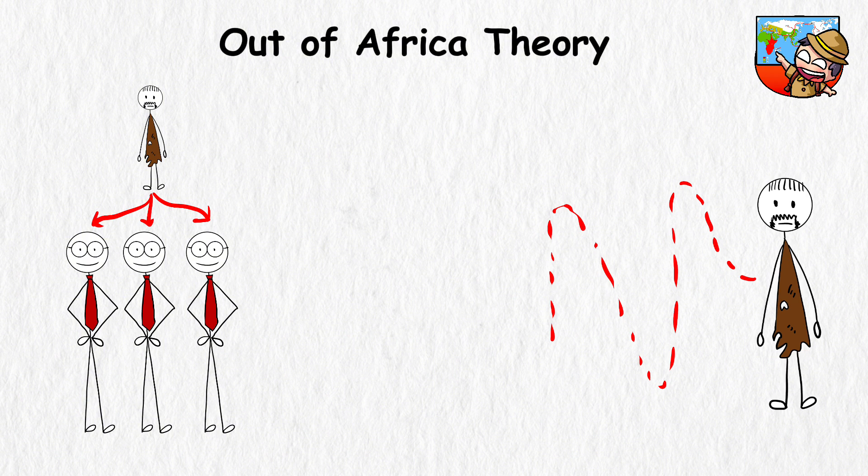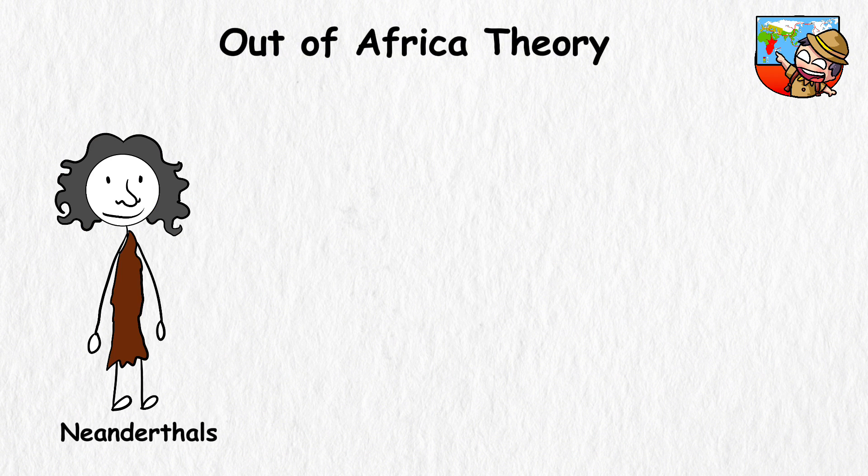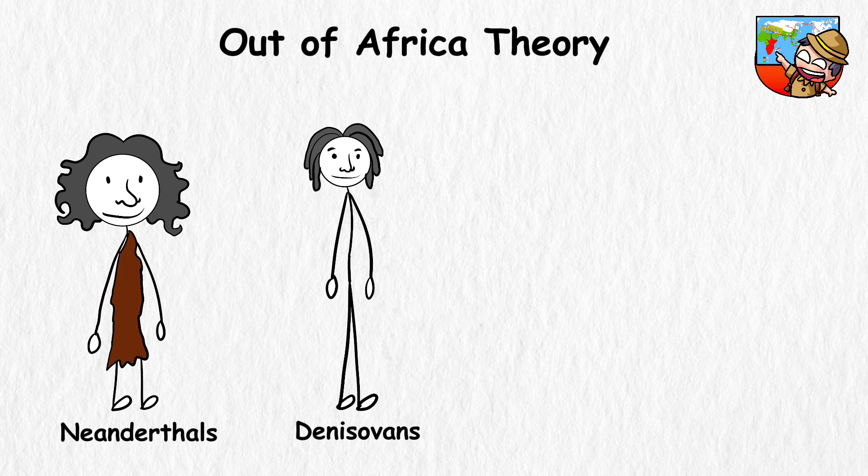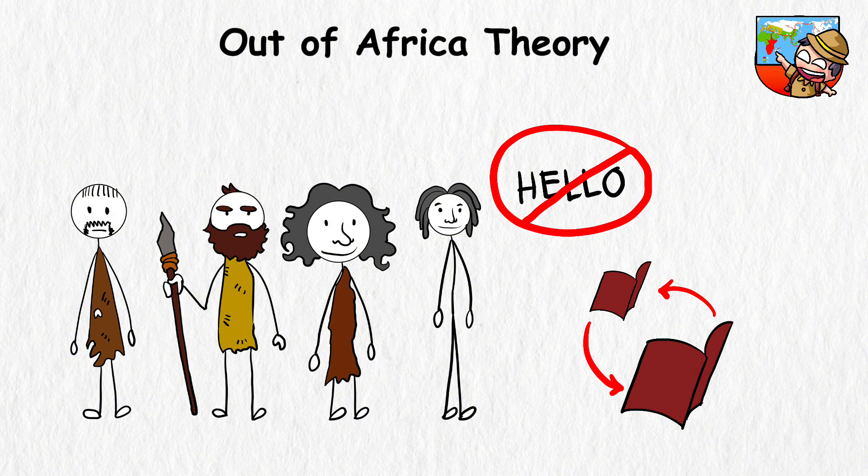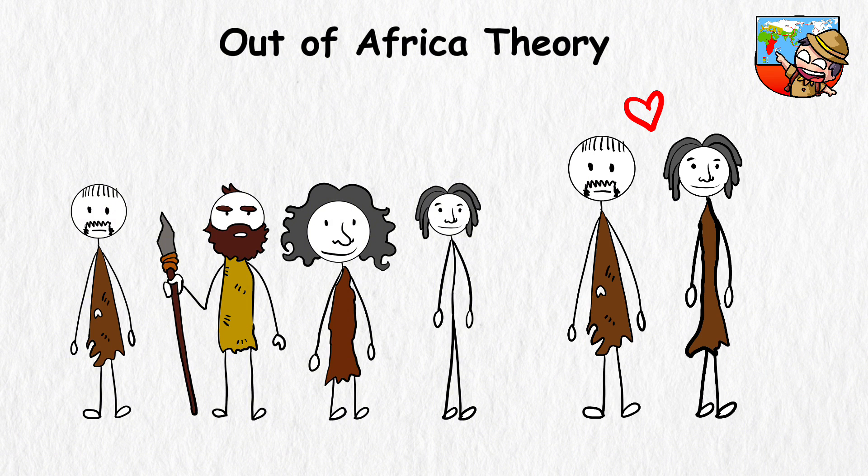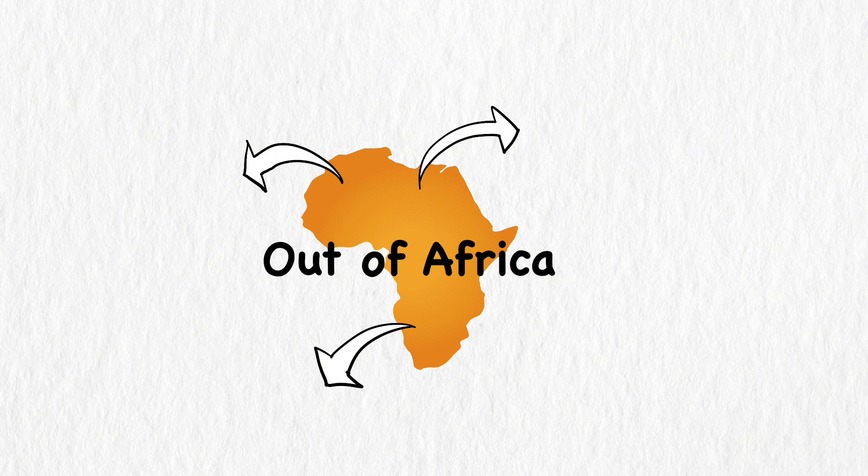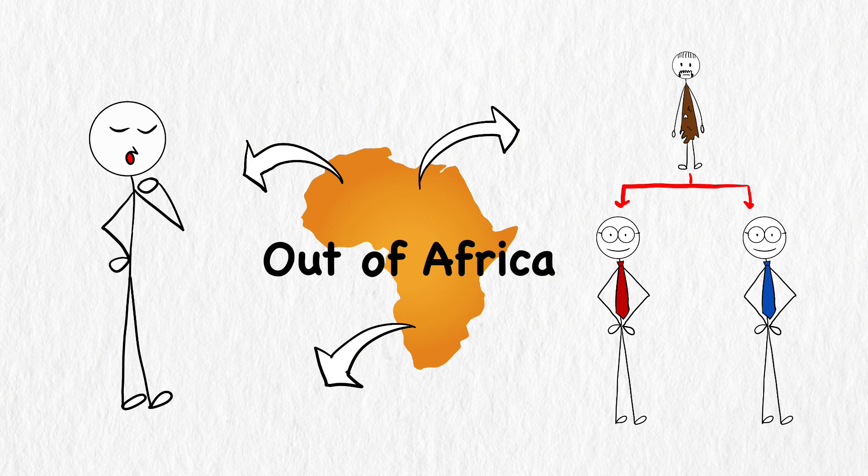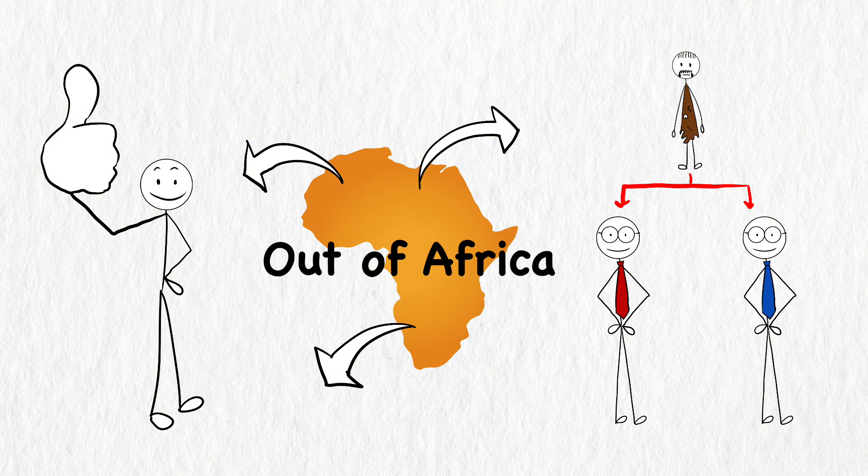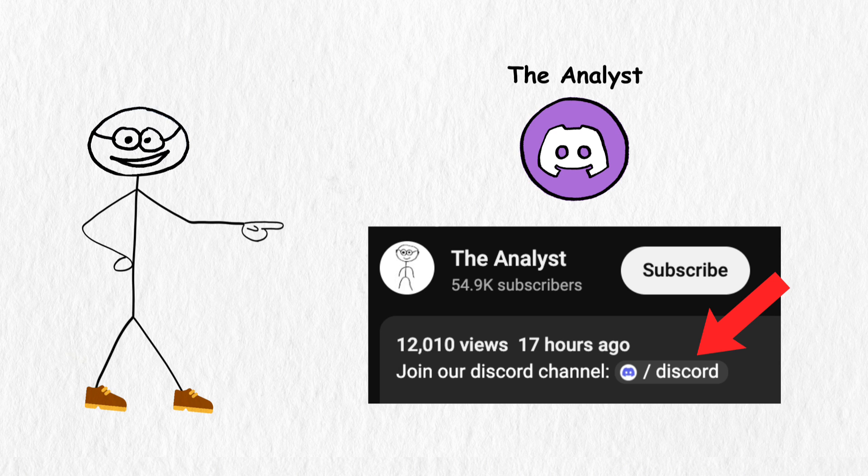As these early humans traveled, they encountered other human species, like Neanderthals in Europe or Denisovans in Asia. And as it turns out, our ancestors didn't just say a polite hello and move along. They intermingled, swapped stories, and even genes. So you might be a product of an interspecies romance that happened thousands of years ago. The Out of Africa Theory may also suggest that we're relatives from thousands of generations ago. So you might want to help a brother out by subscribing to our channel and joining our discord.